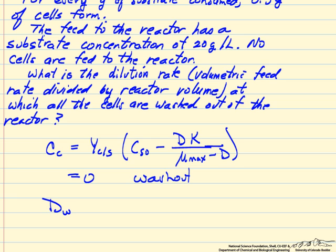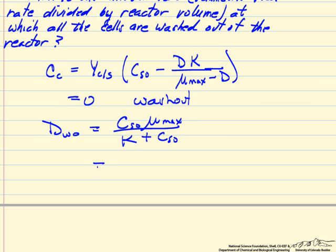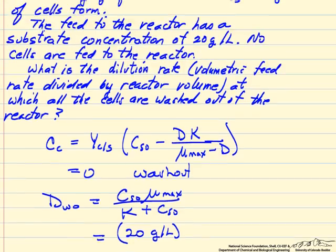If we solve the equation for the dilution rate at washout, it's related to these constants and the inlet concentration of the substrate. For this problem, the inlet concentration is 20 grams per liter.